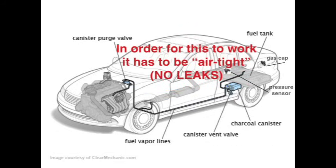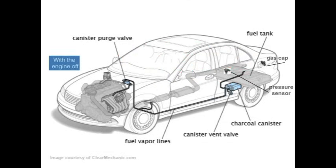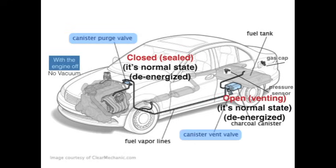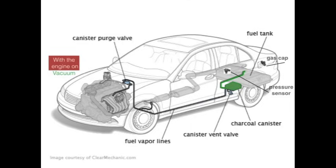In order for this to work, the system has to be airtight — no leaks. With the engine off we have no vacuum, so the normal engine-off state is: the canister purge valve is closed and the canister vent valve is open, or venting. That's the normal state. The vapor in the fuel tank can now be stored in the charcoal canister, and we will use engine vacuum to get it out of there.